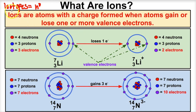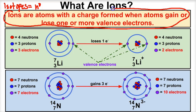So what are ions and how do they work? Ions are atoms with a charge, formed when that atom or atoms gain or lose one or more electrons. Basically, an ion is a charged atom formed when that atom either loses or gains one or more electrons.